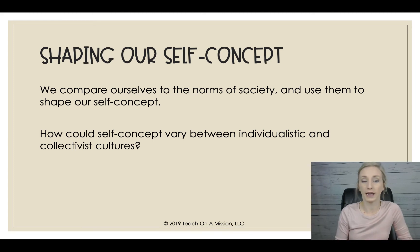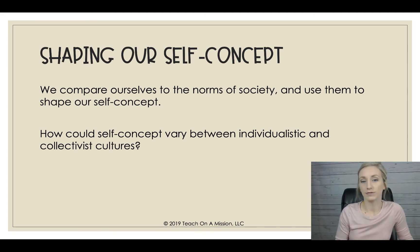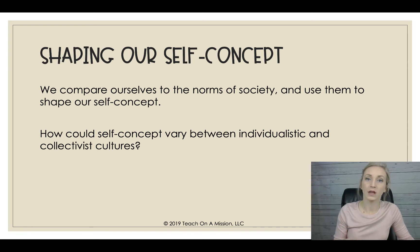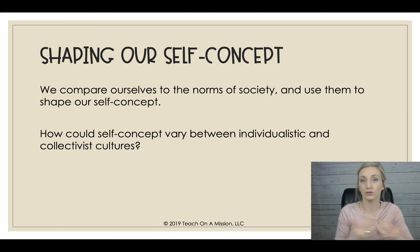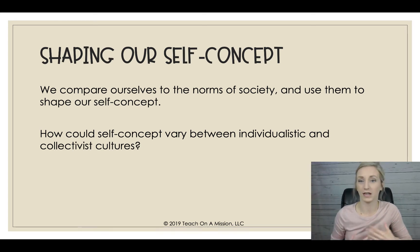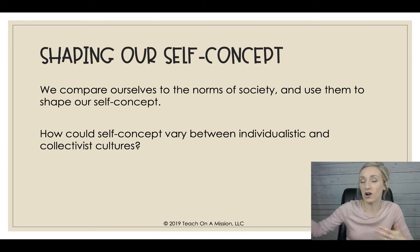Shaping our self-concept happens when we compare ourselves to societal norms and use them to define who we are. Consider: how could self-concept vary between individualistic and collectivist cultures? The norms are very different. In an individualistic culture, norms center on the individual and their goals — not having ambitious goals breaks those norms. In a collectivist culture, having big personal goals and leaving home to start a new company would be honored in an individualistic culture but not in a collectivist one.